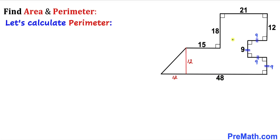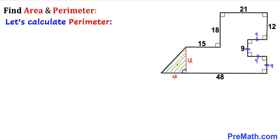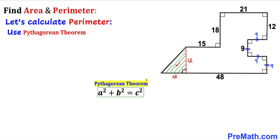Now let's calculate the perimeter of this shape. We know all the side lengths except for one diagonal side, so we need to find its length. Focusing on the triangle, we can see it is a right triangle, so we are going to use the Pythagorean theorem: a² plus b² equals c².